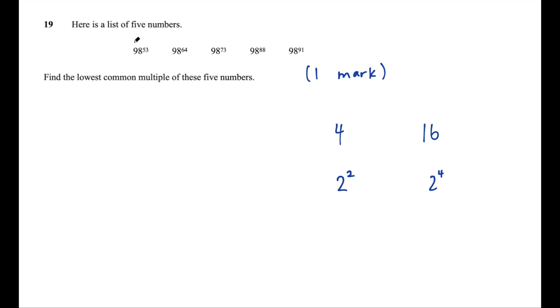Are you getting the solution to this question yet? If we're asking what is the lowest common multiple of a list of numbers that are all the same number, just with different powers, well, we automatically know 98 to the power of 53 is a factor of 98 to the power of 91. Within 98 to the power of 91 is 98 to the power of 53 multiplied by 98 to the power of something else.